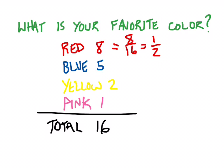Jumping down to blue, our total responses were 5 out of 16. That's the fraction of the responses for blue. Yellow was 2 out of 16. 2 out of 16 could be reduced to 1 eighth if we wanted to. And finally pink. Pink is going to be 1 out of 16. So we're going to begin with these initial fractions of responses.